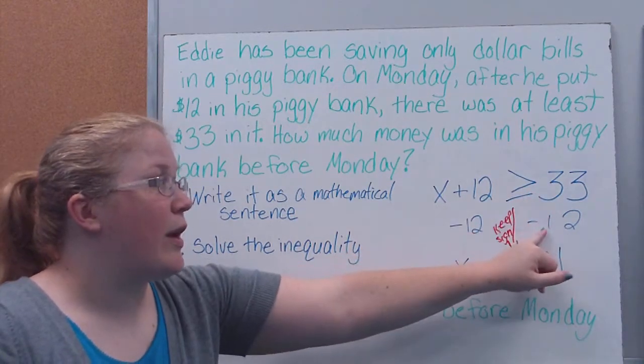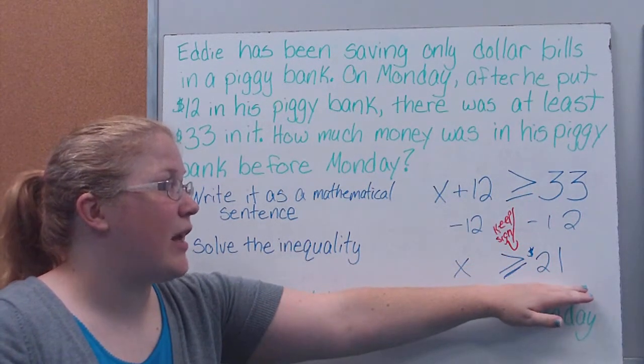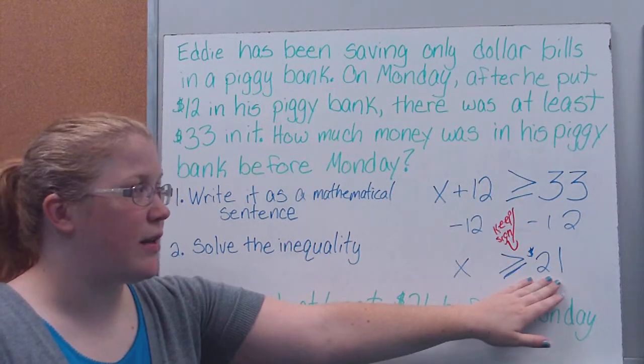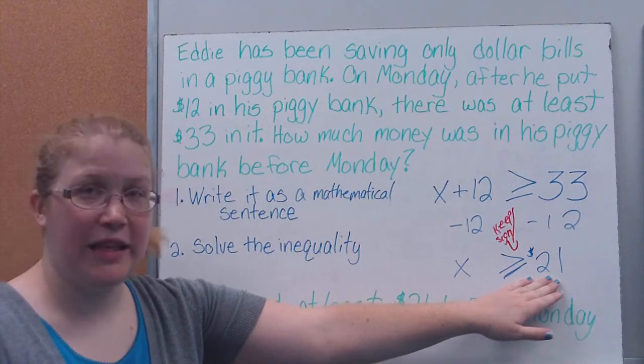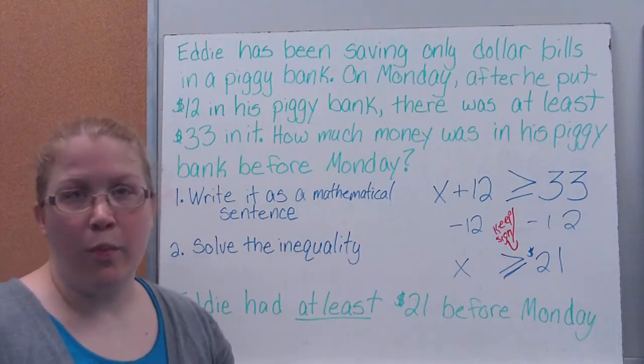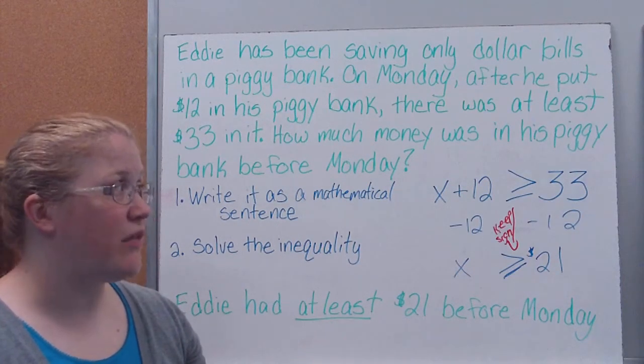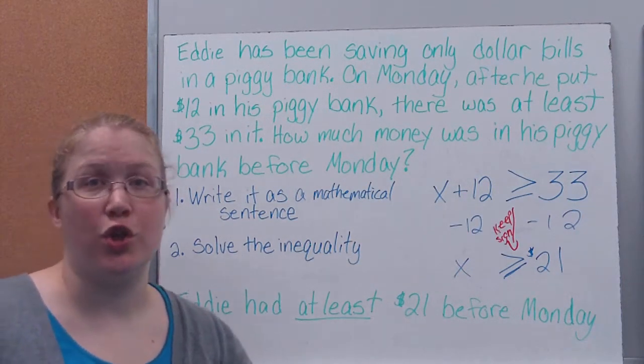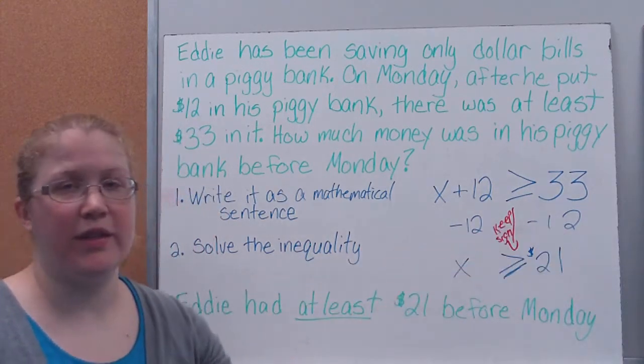When I balanced out this side by subtracting the negative 12, I find out that on Monday, he had to have had at least $21. Meaning, he had $21 or more in there. Because then when I add 12 to that, I get 33 or a larger number, depending on what this was.